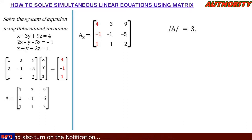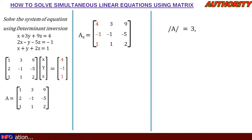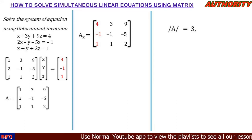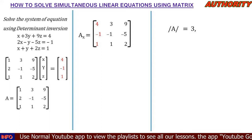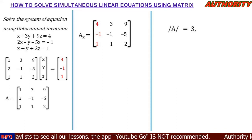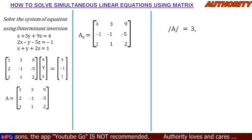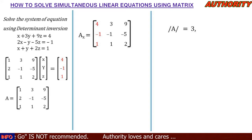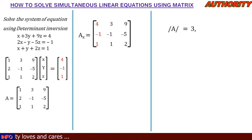Now we form matrix Ax by replacing the first column [1; 2; 1] of matrix A with the constant vector [4; -1; 1]. So matrix Ax = [4, 3, 9; -1, -1, -5; 1, 1, 2]. The determinant of matrix Ax equals 3.